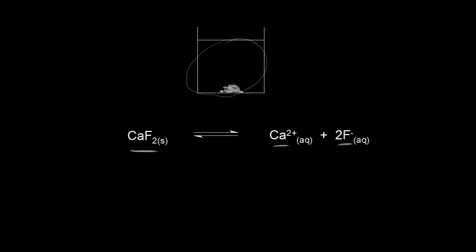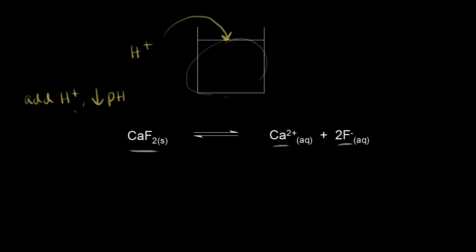Now let's say we add some acid — a source of protons to our beaker — and we observe what happens. We would see some of our calcium fluoride dissolve. And if we add enough acid to completely dissolve our calcium fluoride, we've added H plus, decreased the pH, and increased the solubility of our slightly soluble compound, calcium fluoride.